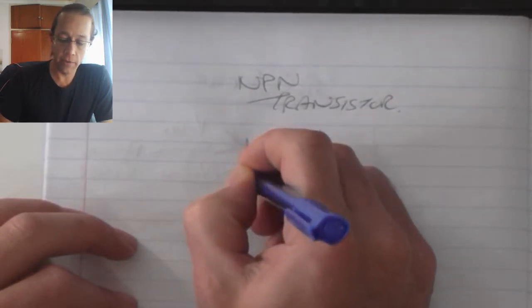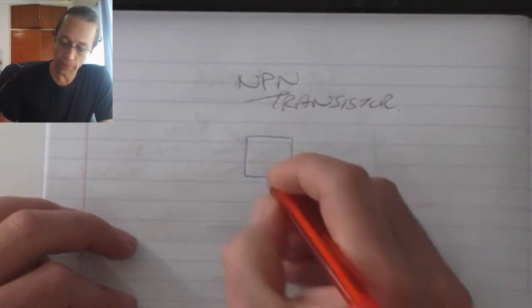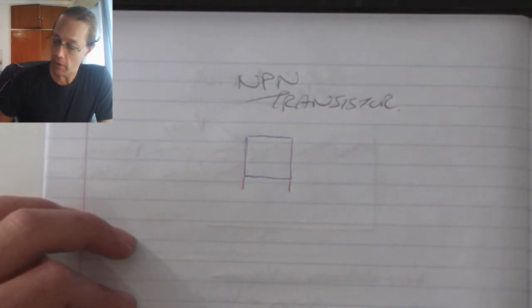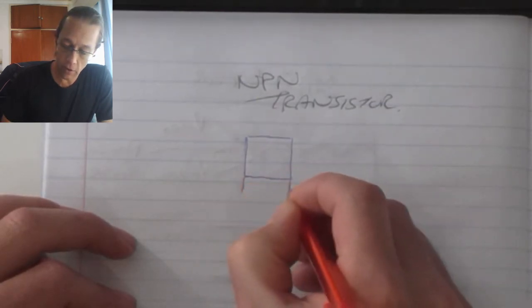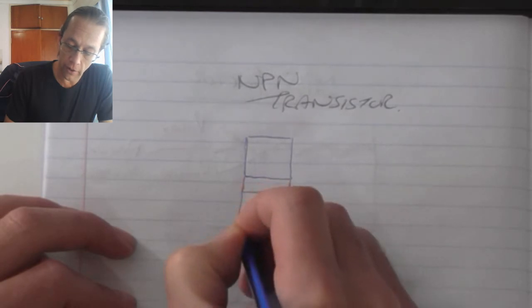Basic construction: as the name suggests, we've got an N-type material which joins to a P-type material that's quite thin, and that joins again to another N-type material.